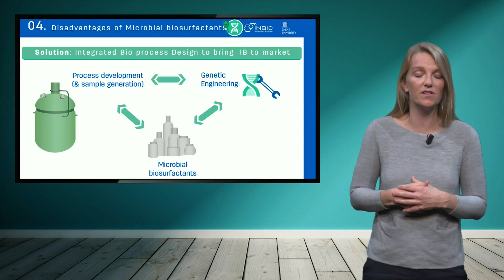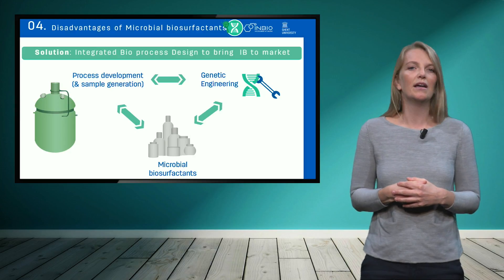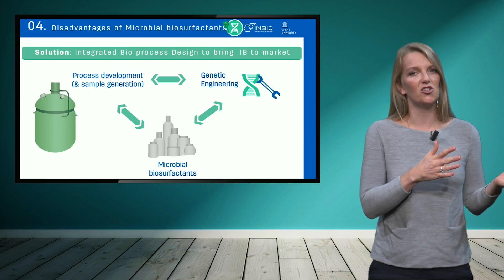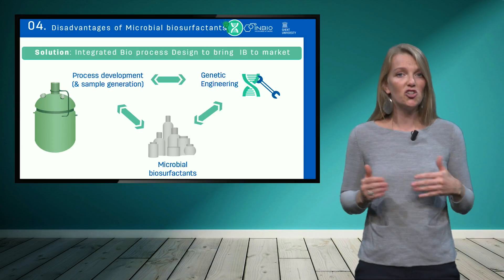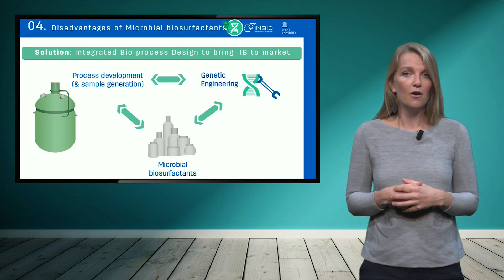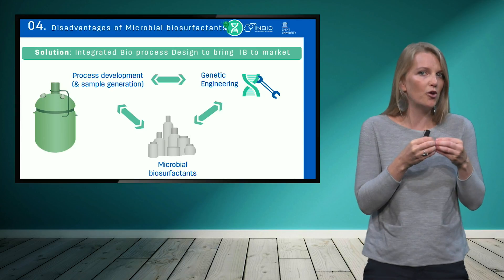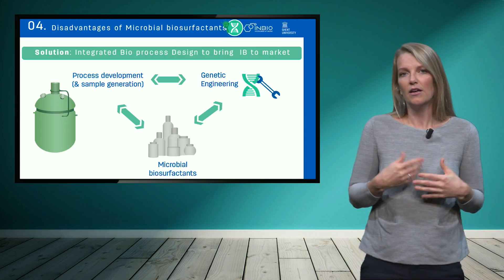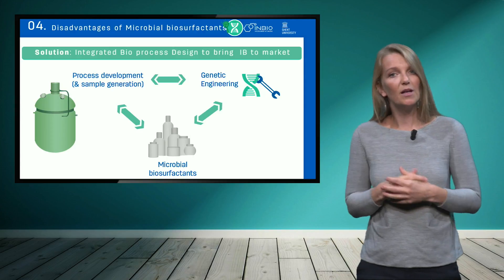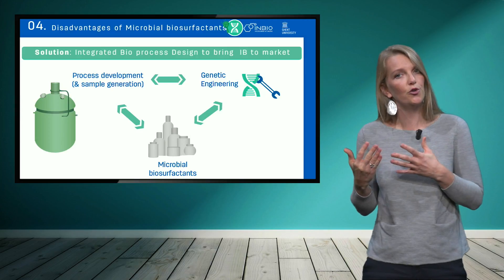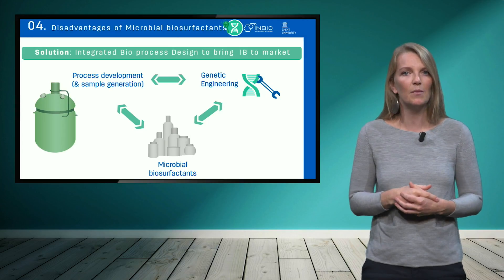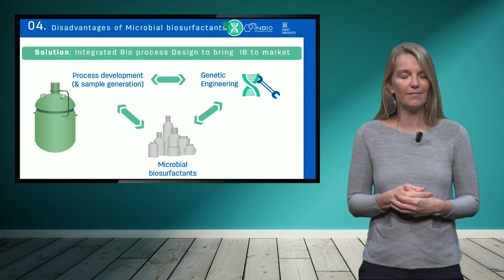This is an unwanted situation, and at the University of Ghent at Imbio and the Biobase Europe pilot plant, we have defined a strategy to solve these issues. By combining genetic engineering and process development and scale-up, you can overcome the disadvantages currently blocking more widespread commercialization of microbial biosurfactants. For example, strain engineering — the engineering of the microorganism that produces the biosurfactant — can enhance a more uniform biosurfactant while also helping to increase variety. Process development on the other hand will help in generating pure and more uniform products. This strategy, where you keep these different processes going and iterate between them, is called an integrated bioprocess design approach. Thank you for your attention.